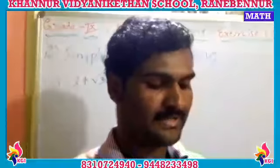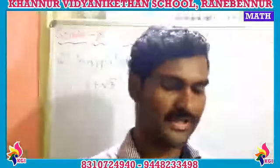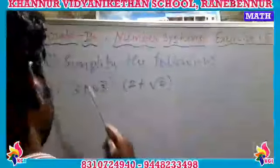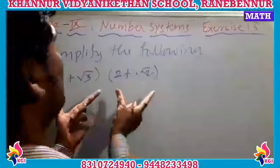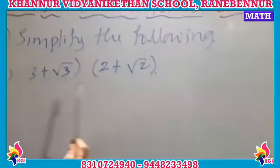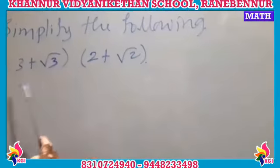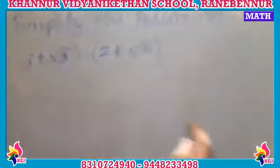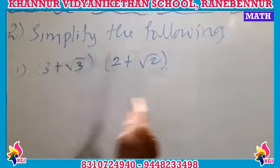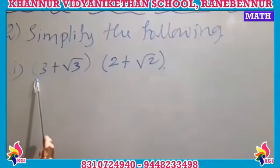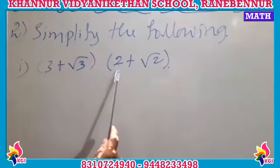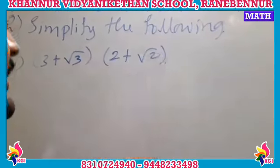Now we move to the second main question: simplify each of the following expressions. Simplify means we perform the given operation — if a product is given, we find the product; if division is given, we perform division. The first expression is (3 + √3) into (2 + √2).